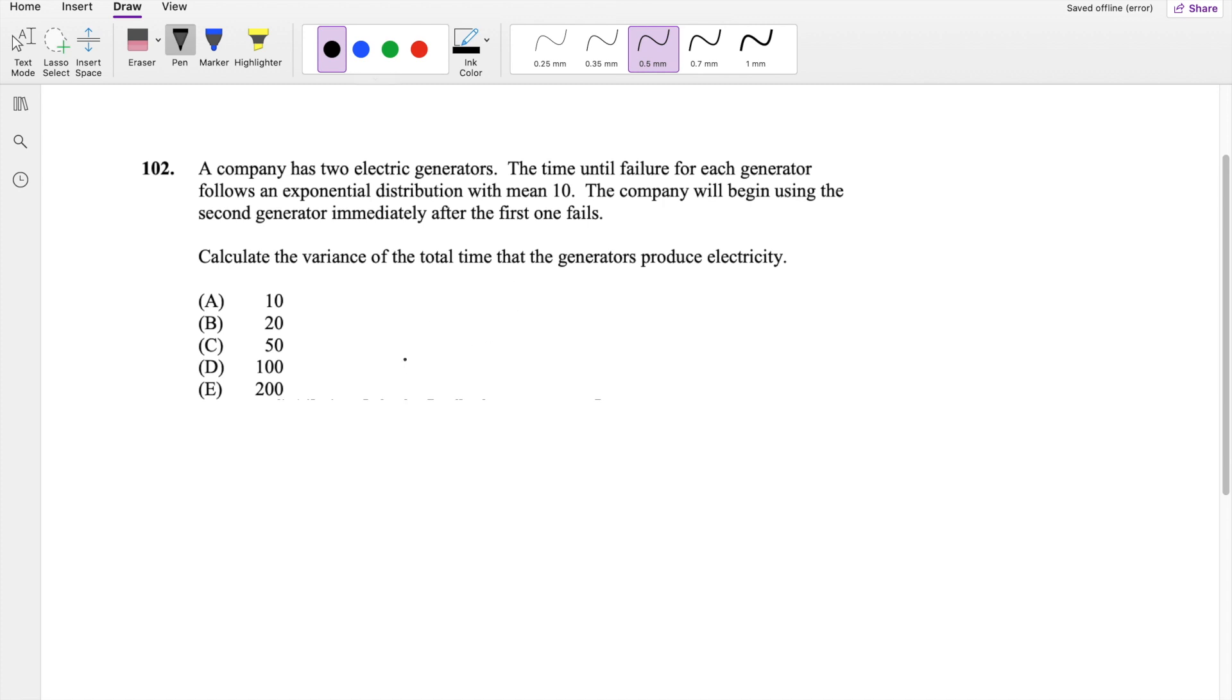So they say calculate the variance of the total time to generate produced electricity. So that's the variance of X plus Y. But then because we know that this is independent, right? As in, the time it takes for the first machine does not affect the time it takes for the second machine. So we know that this is exactly just equal to the variance of X plus the variance of Y.